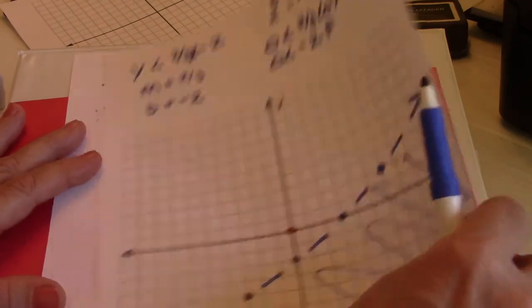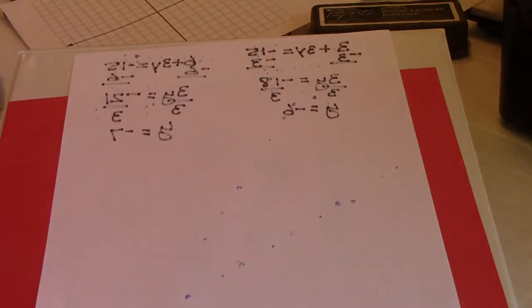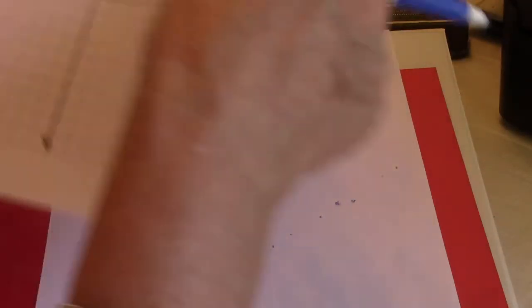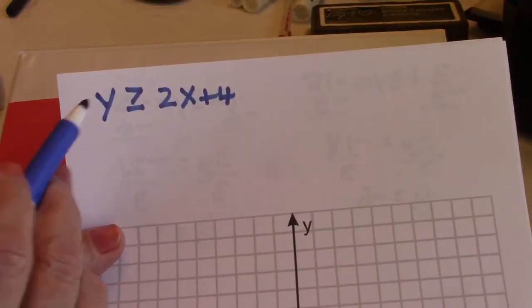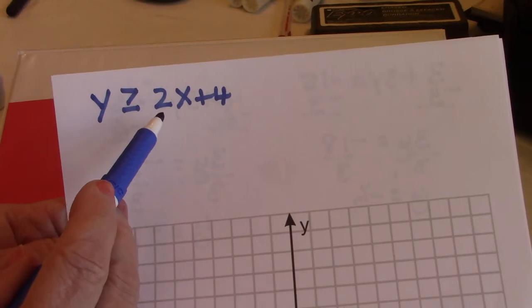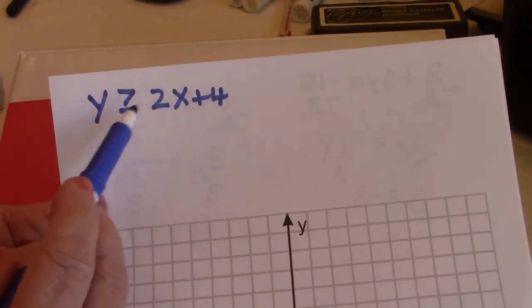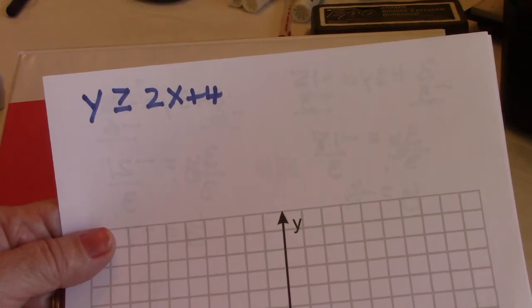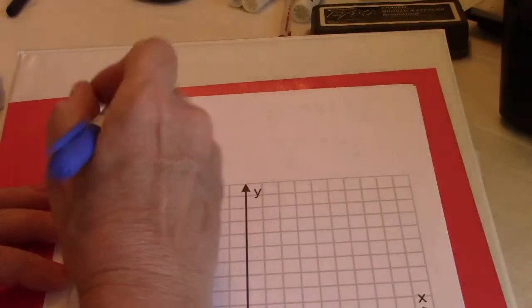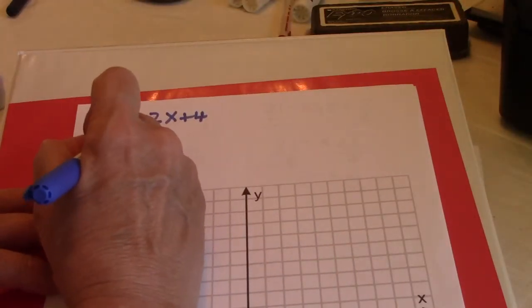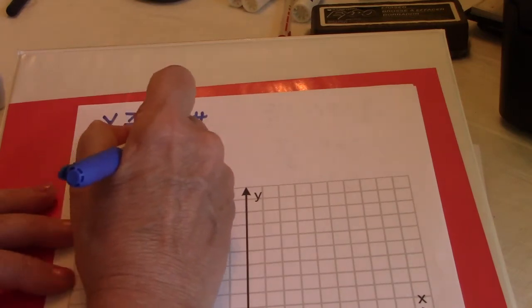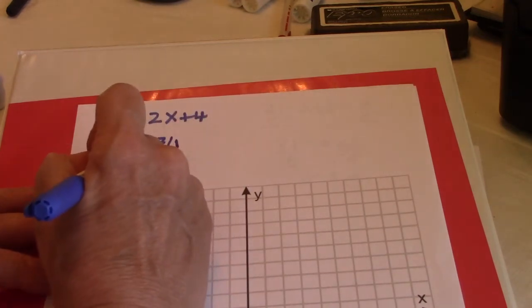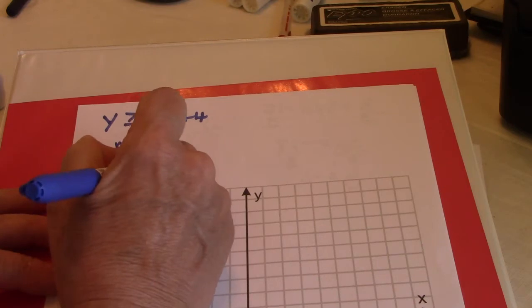So that means that anything in this shaded area, not the line because it's not equal to, but anything in the shaded area will be a solution to this equation. Okay, let's try another one. Y is greater than 2x plus 4. Y is greater than 2x plus 4. Well again, that looks like it's in the slope intercept form.